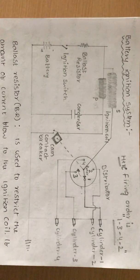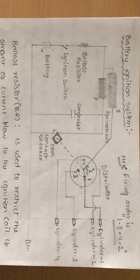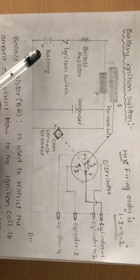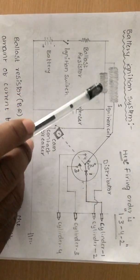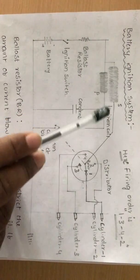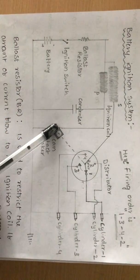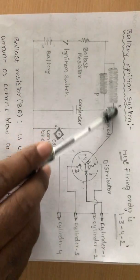In this class we are focusing on the battery ignition system. This is the circuit used in the battery ignition system. Let us identify all the parts: battery, ignition switch, ballast resistor, primary coil and secondary coil combined as the ignition coil, contact breaker, condenser, and the secondary circuit with the distributor.